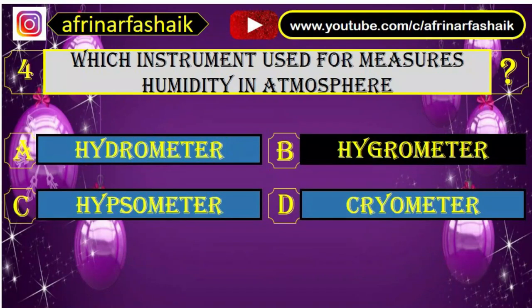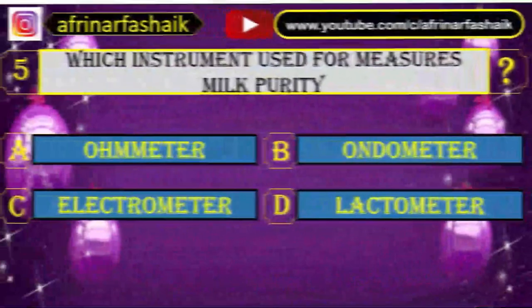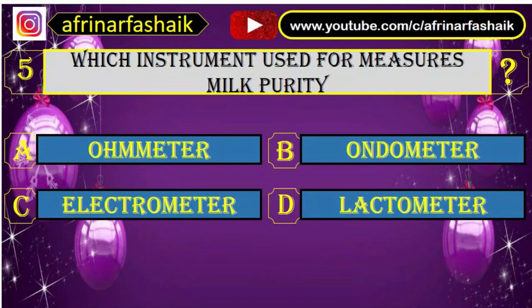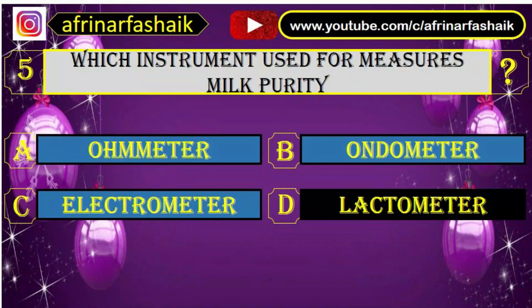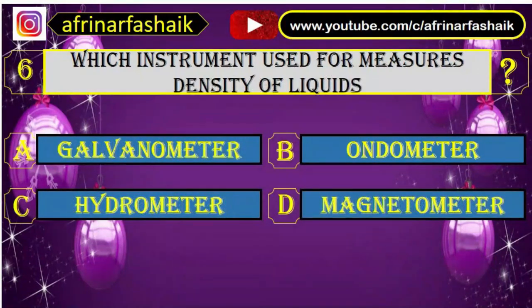B. Hygrometer is the right answer. Question number five: which instrument is used to measure milk purity? Your options are A. Ometer, B. Anemometer, C. Anemometer, and D. Lactometer. D. Lactometer is the right answer.